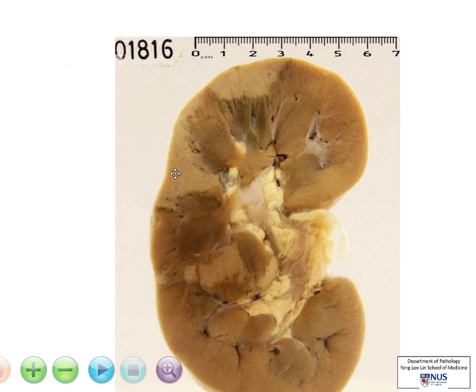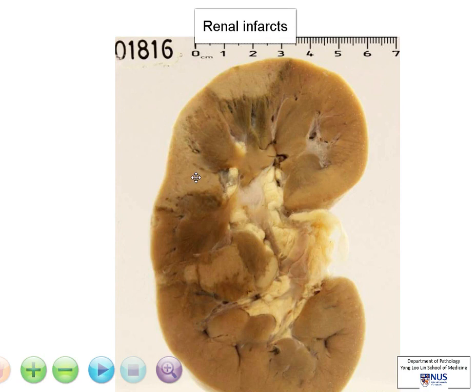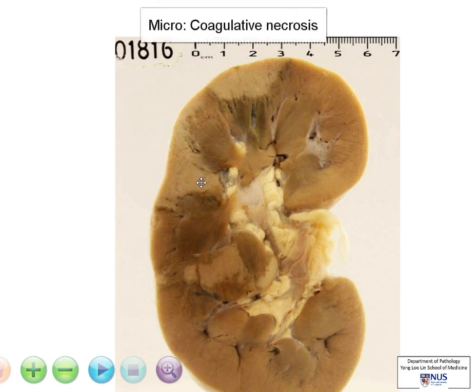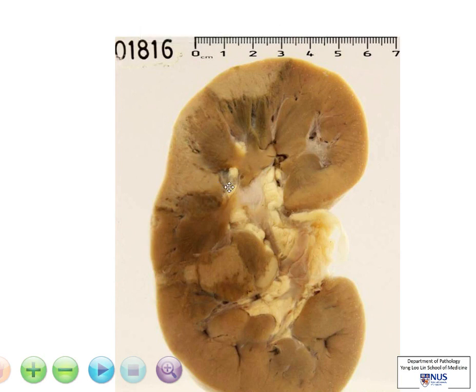These pale areas correspond to renal infarcts, and what we will look at under the microscope would be areas of coagulative necrosis, and this is due to ischemia, or decreased blood supply.